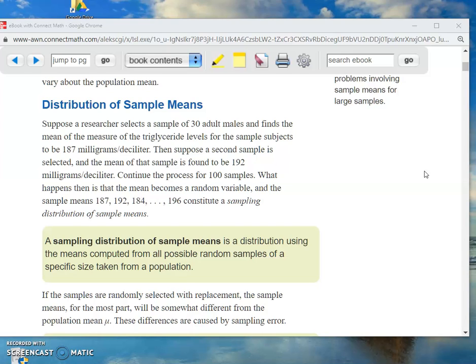Then he takes a second sample is selected, and the mean of that sample is found to be 192. And again, you don't know what individual data points are. All you know is what the X-bar is, the sample mean is. Continue the process for 100 samples. What happens then is that the mean becomes a random variable. Why not? Why wouldn't it be a random variable? And the sample means, these 100 samples that you took. So the first one you had a sample mean of 187. The next one you had 192. The next one you had 184. Continue, continue, continue. You do that 100 times, and you get what's called a sampling distribution of sample means.